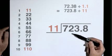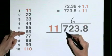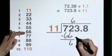11 goes into 72, 6 times. 6 elevens are 66. Subtract to get the remainder, 6. Carry down the 3.